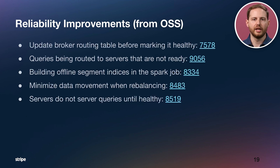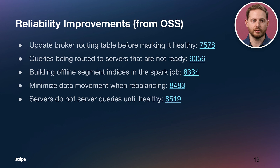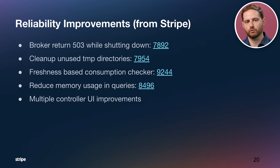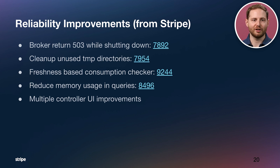Finally, I want to talk about some reliability improvements. At Stripe we have a requirement to replace all hosts every seven to 30 days. Initially we saw latency and availability issues when hosts were restarted or removed, but many open-source improvements have made these go away — improved broker and server cluster join/leave, restart behavior, and minimized data movement during rebalancing, making it possible to replace hosts every seven to 30 days with no SLC impact. My favorite improvement on the Stripe side is the freshness-based consumption checker: real-time servers, when they restart, wait until events are caught up within 20 seconds of system time, meaning by the time the server is healthy and serving queries, we're already meeting our SLC.